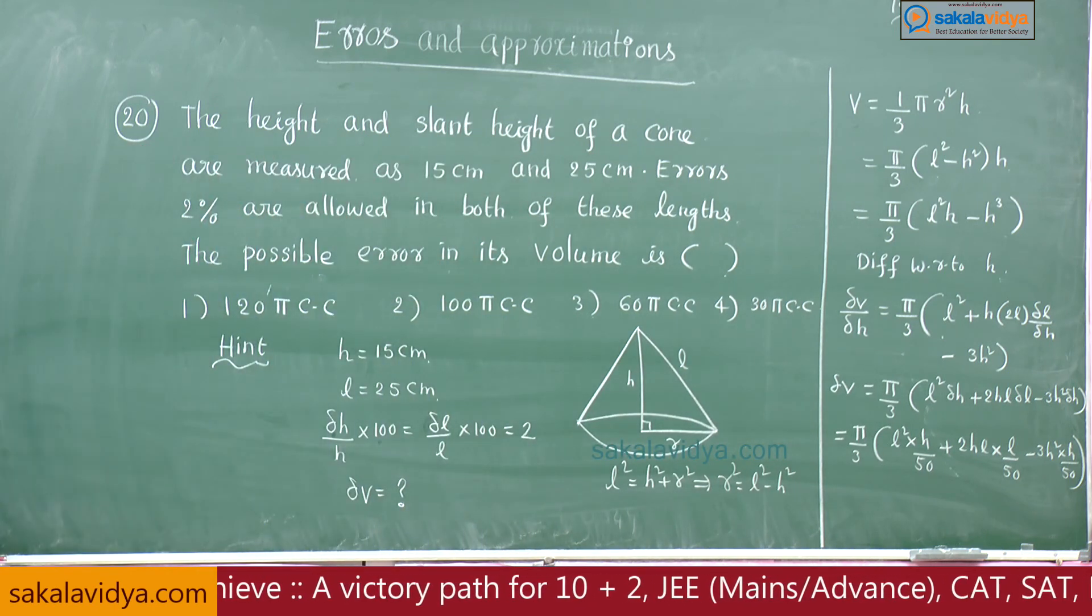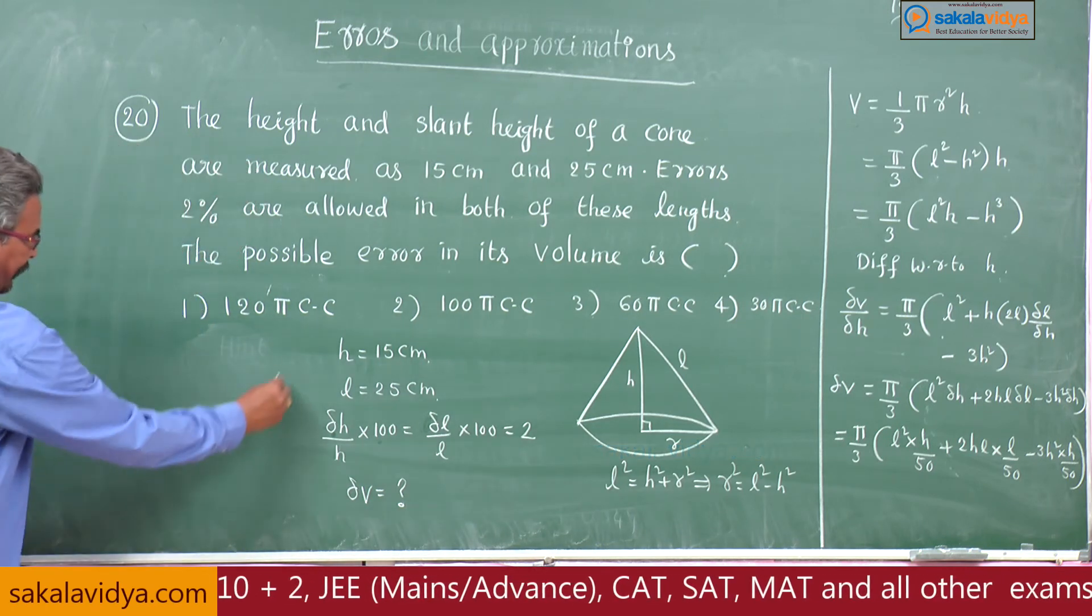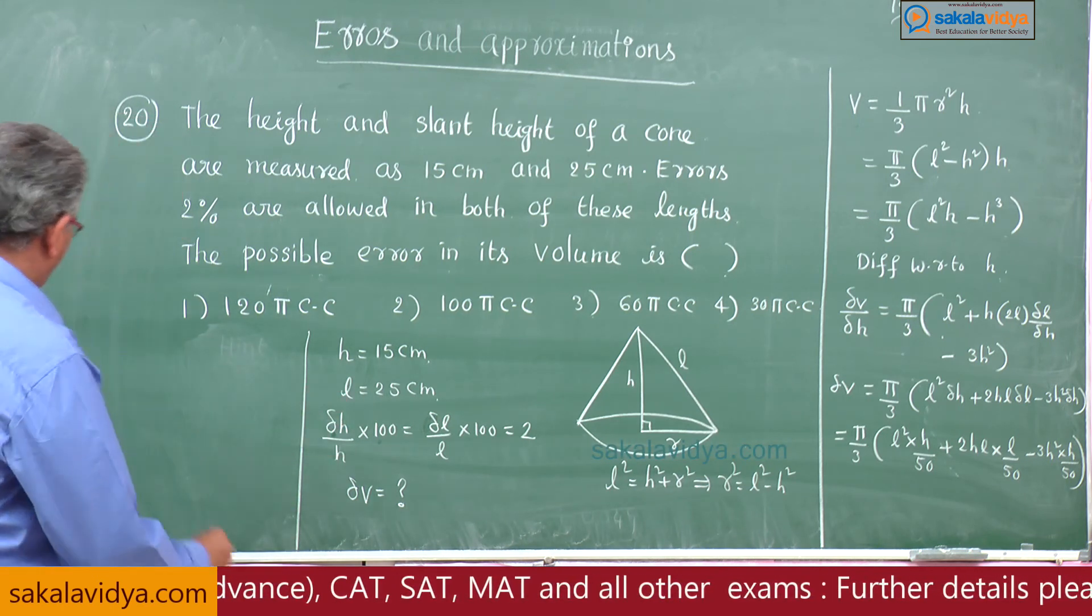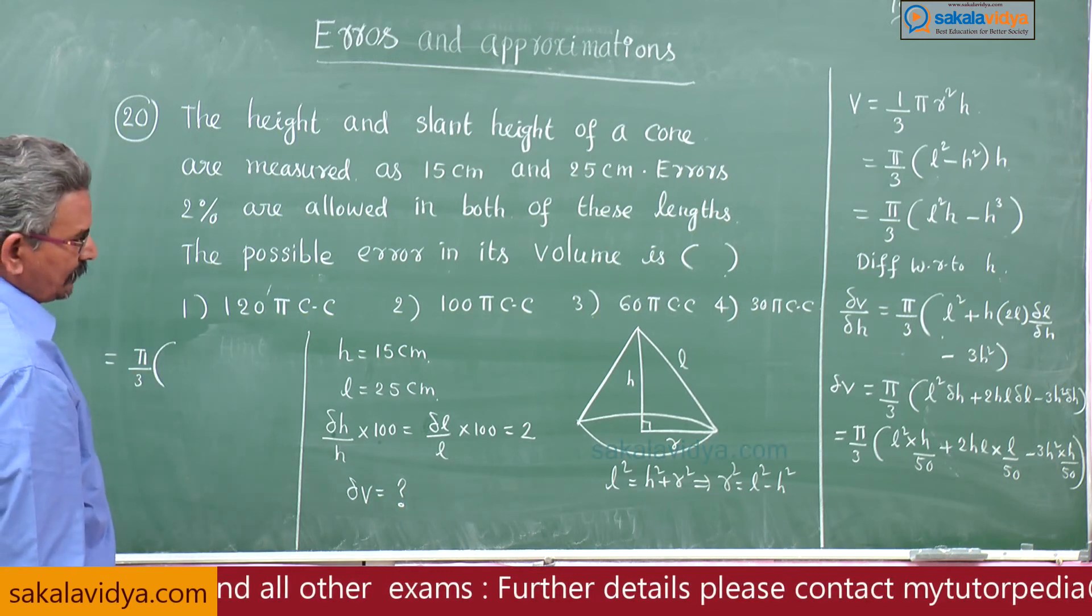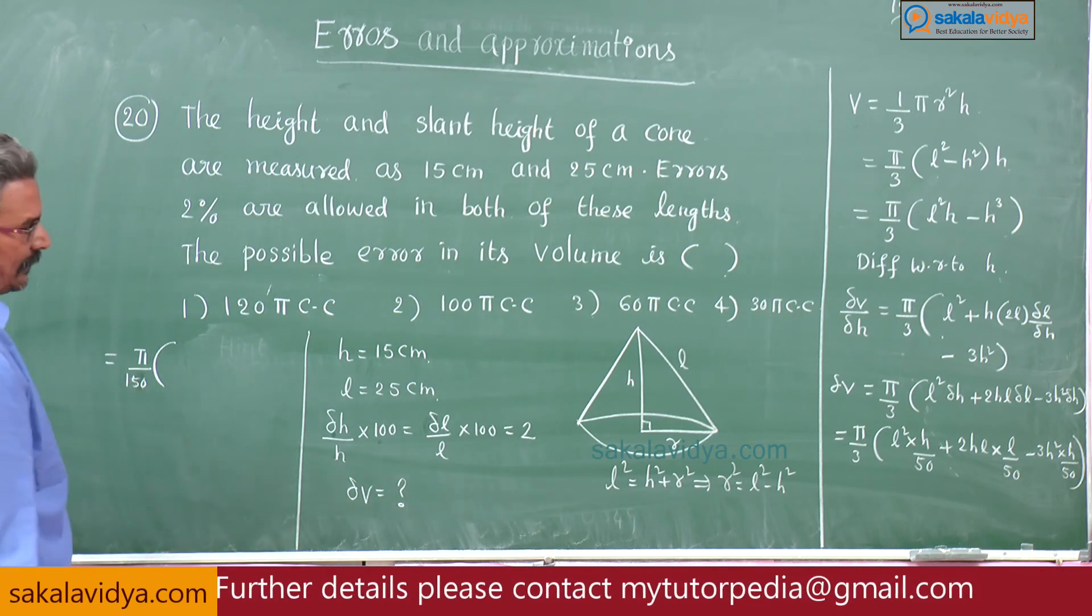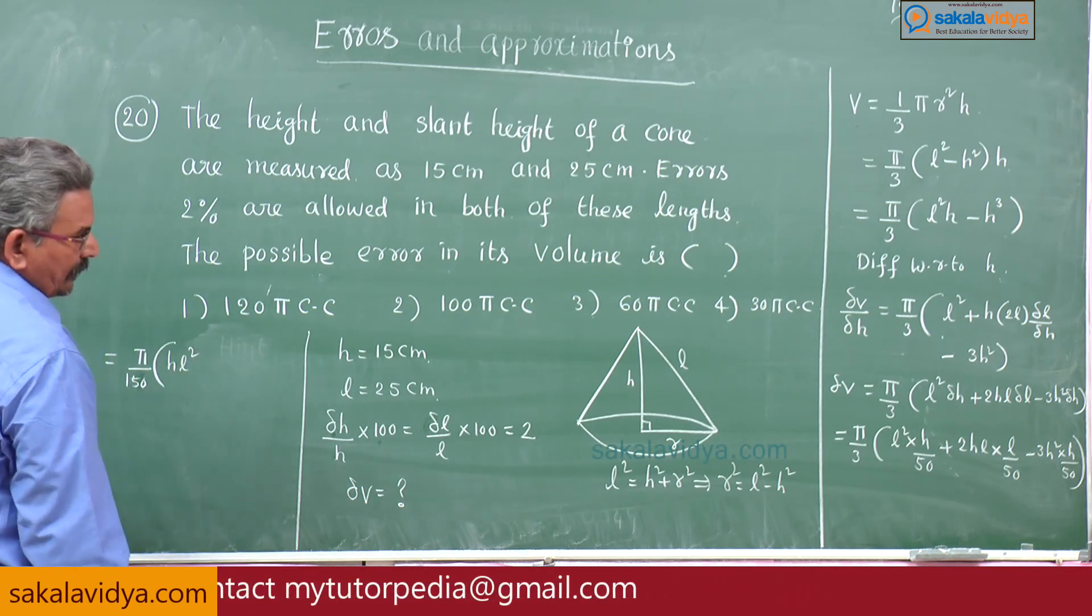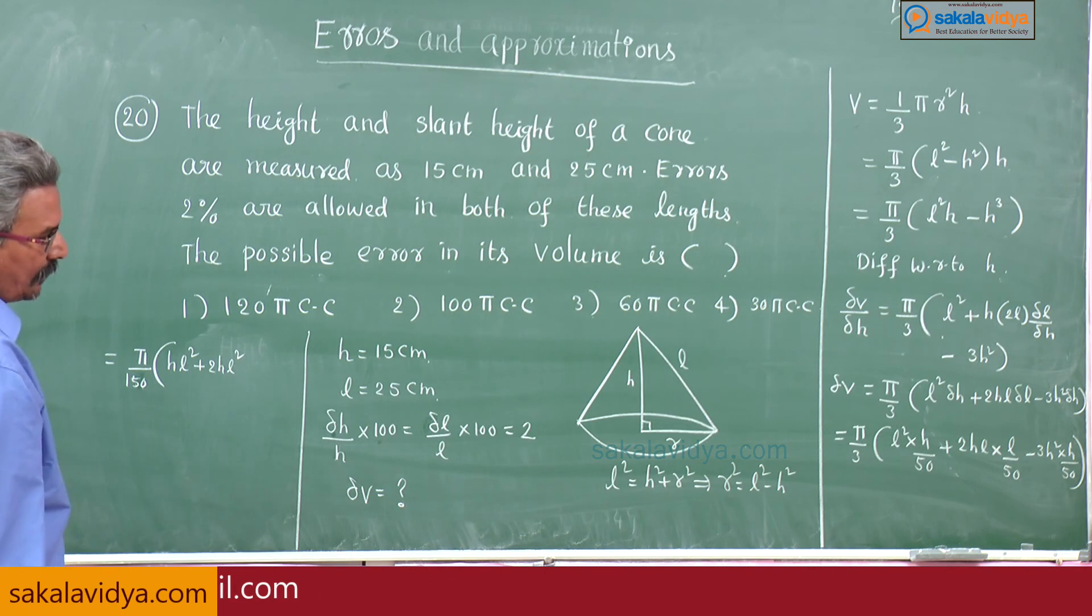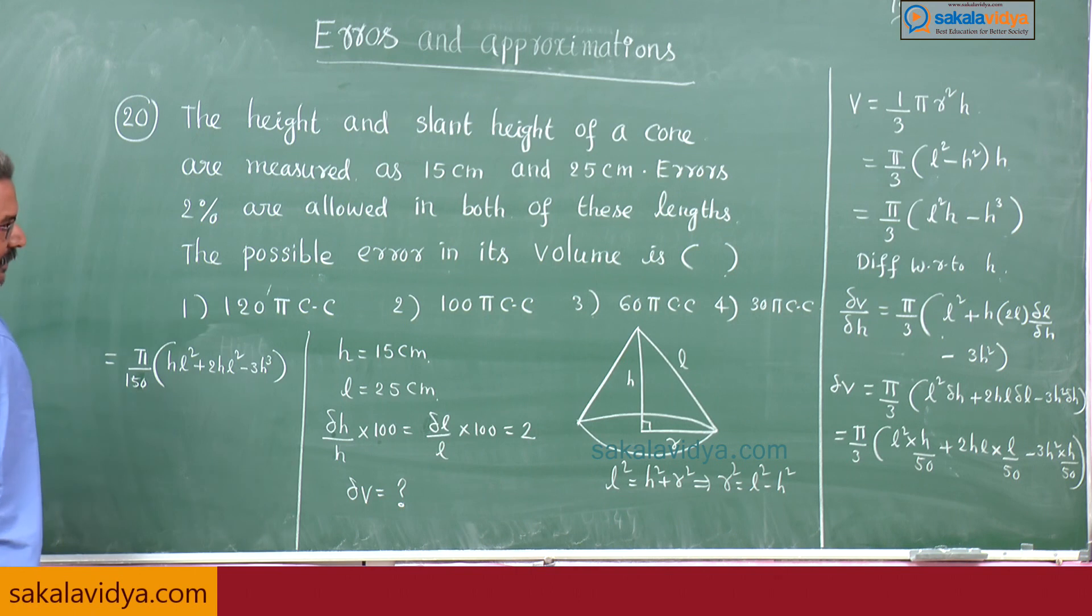Now, substituting π by 3, simplification: 1 by 50 can be taken common. 50h, l square plus 2hl square minus 3h cube.